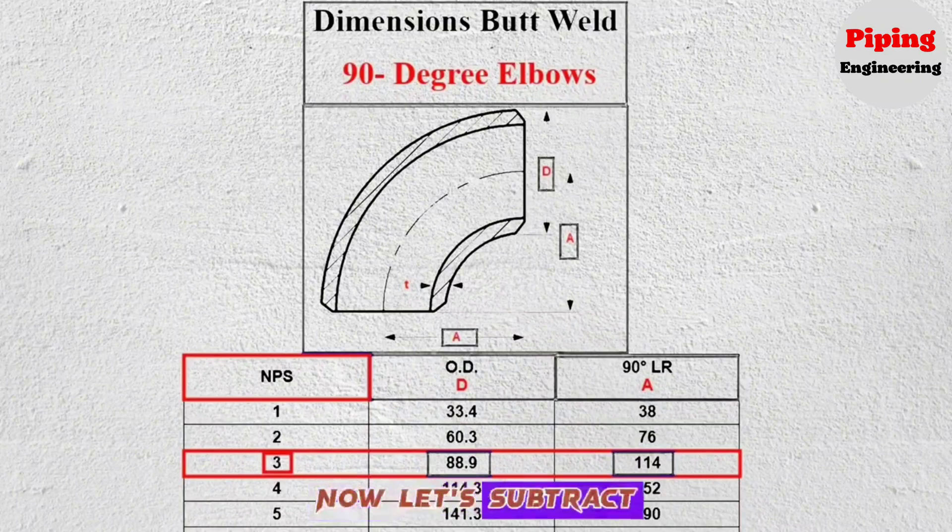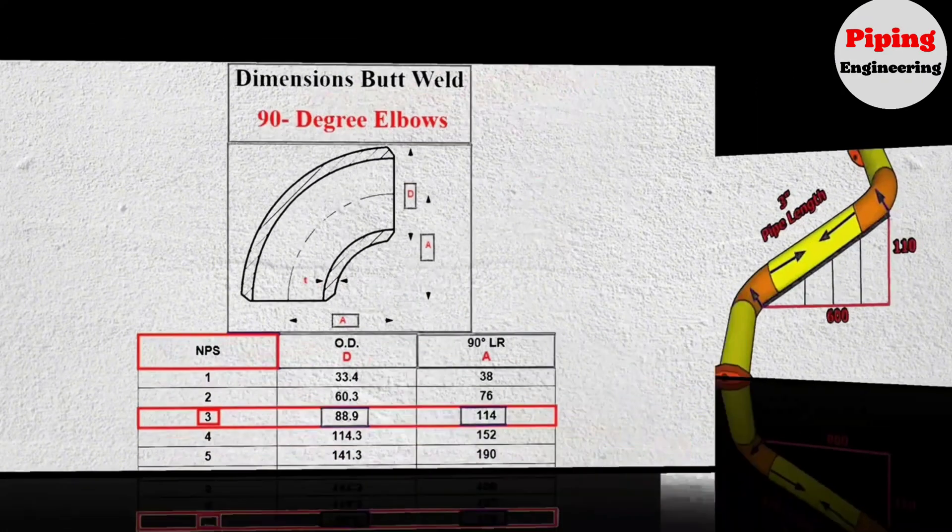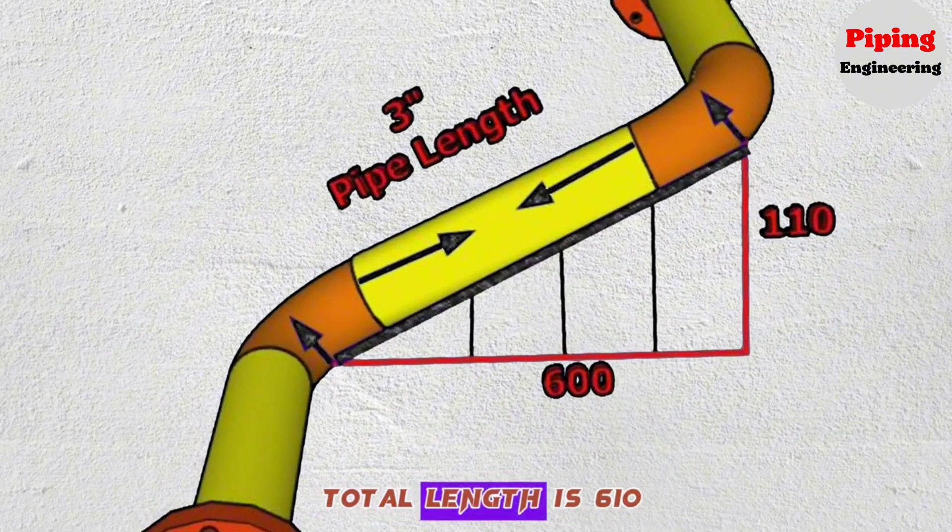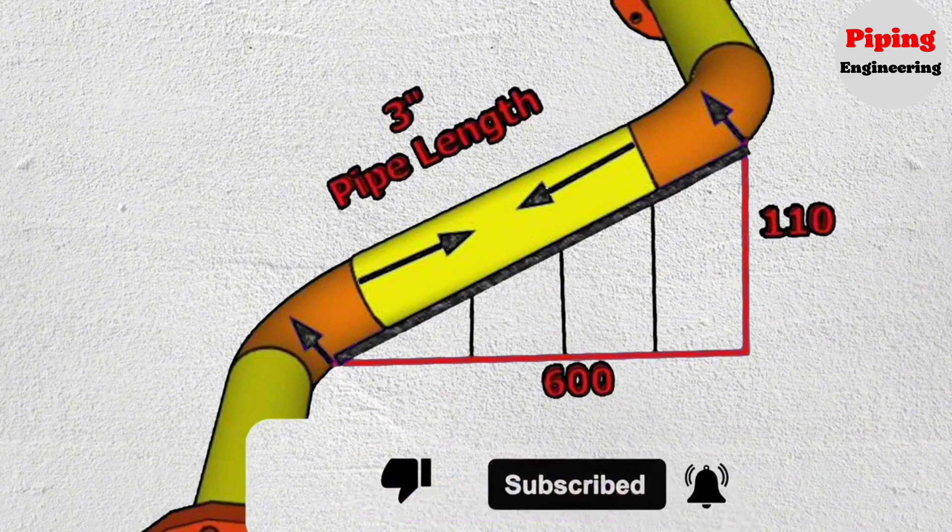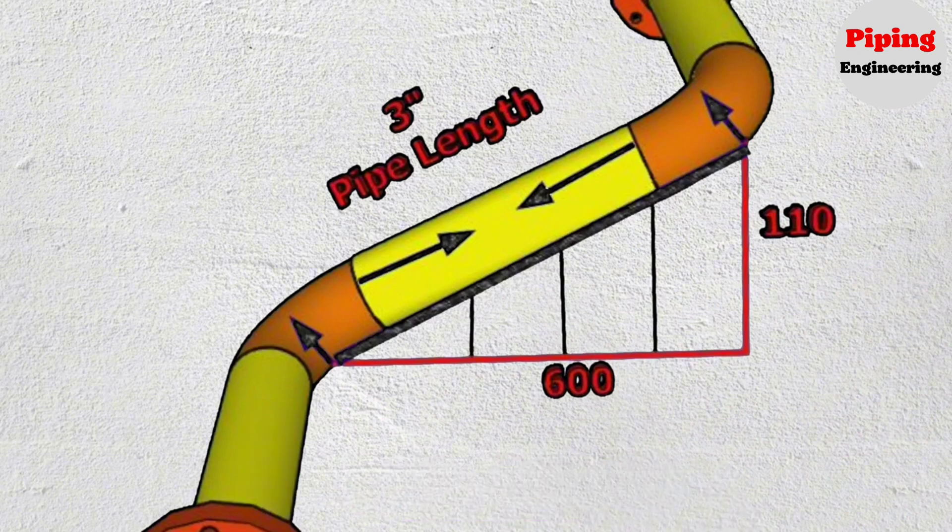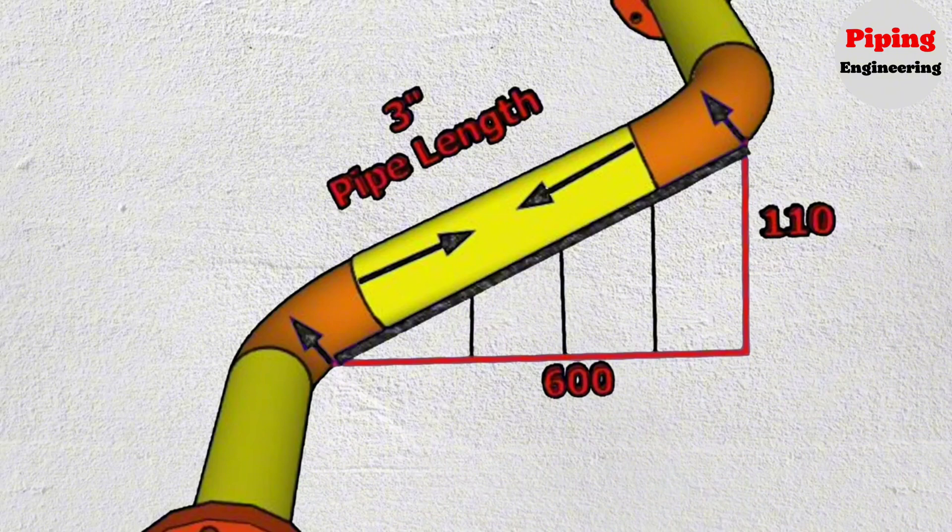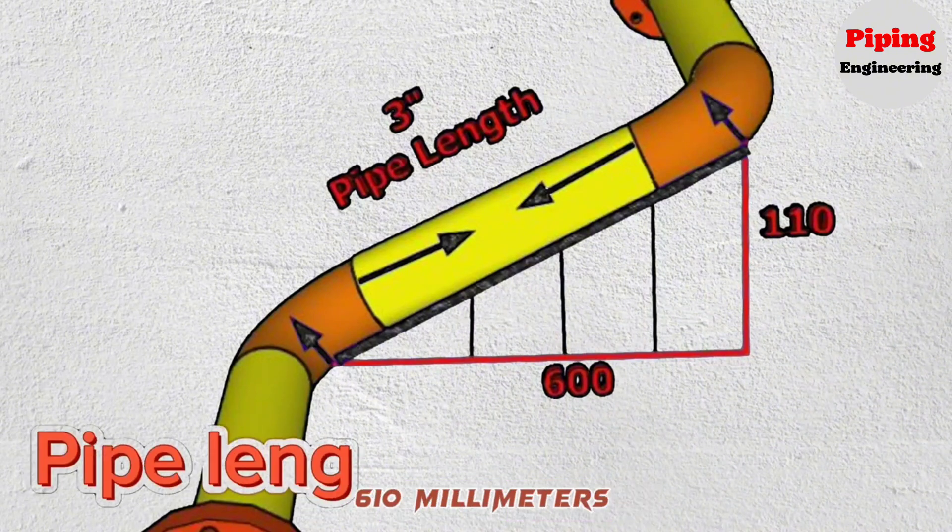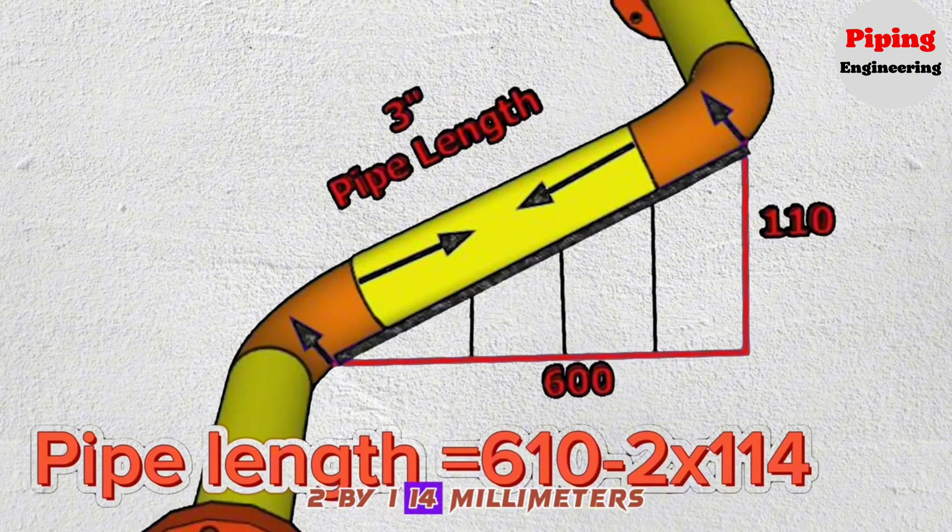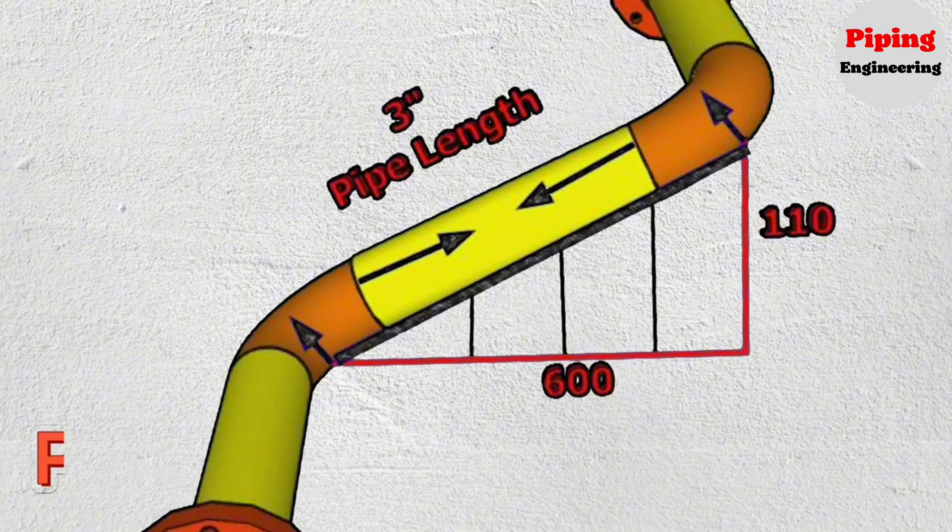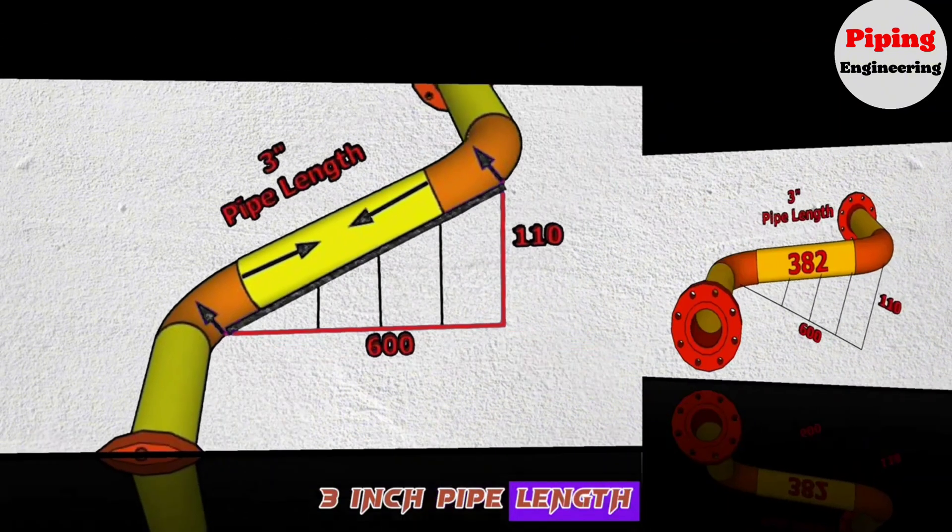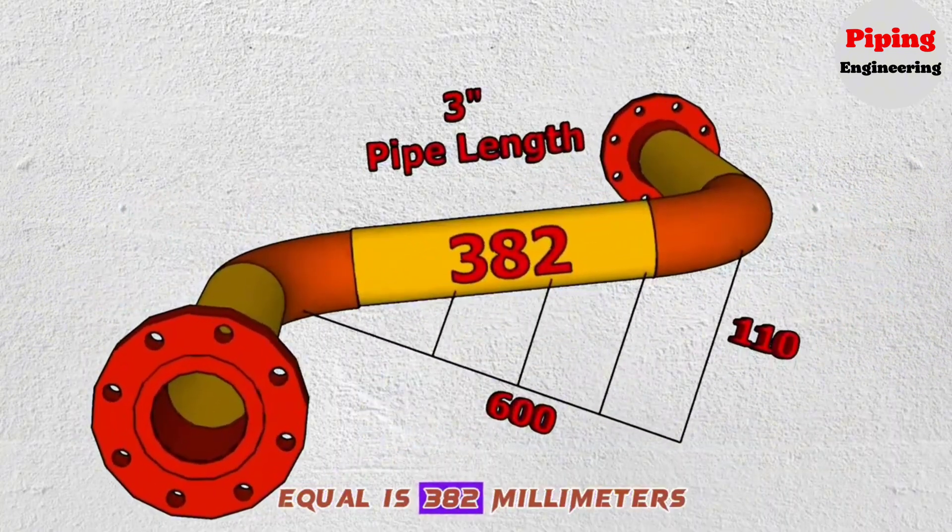Now let's subtract the lengths of the elbows from the total length. We calculated that the total length is 610 and the length of the 3-inch 90-degree elbow is 114 millimeters. Here we calculate and find that 3-inch pipe length is equal to 382 millimeters.